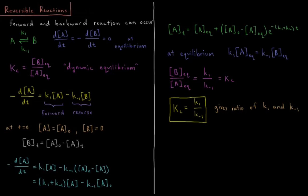This video will discuss reversible reactions in chemical kinetics. A reversible reaction is a reaction which can proceed in the forward and backward direction. An example is reactant A and product B, which has a rate constant in the forward direction K1 and a rate constant in the backward direction K-1.